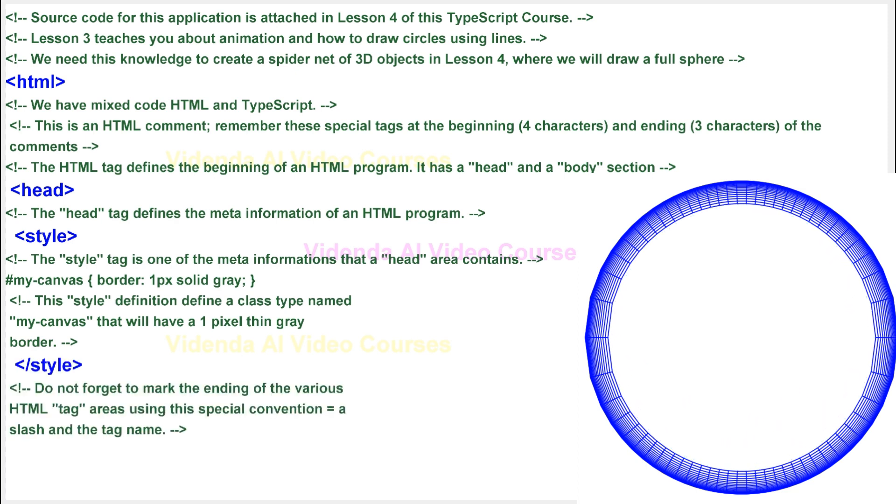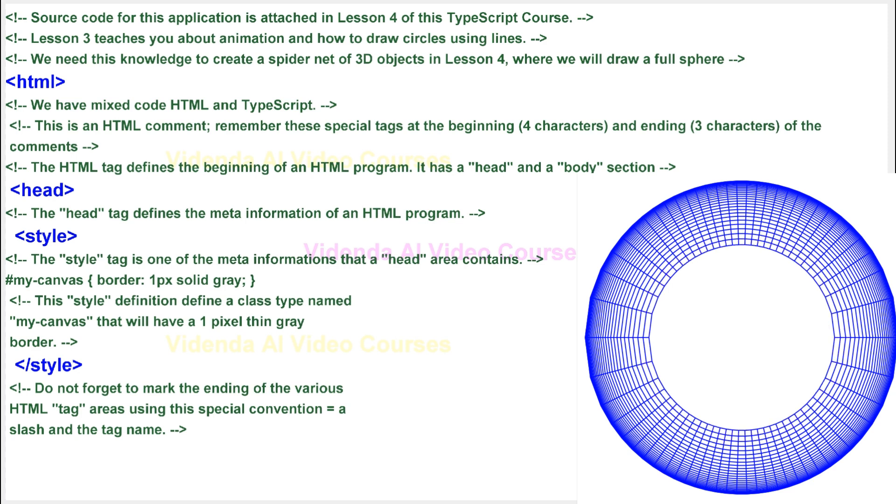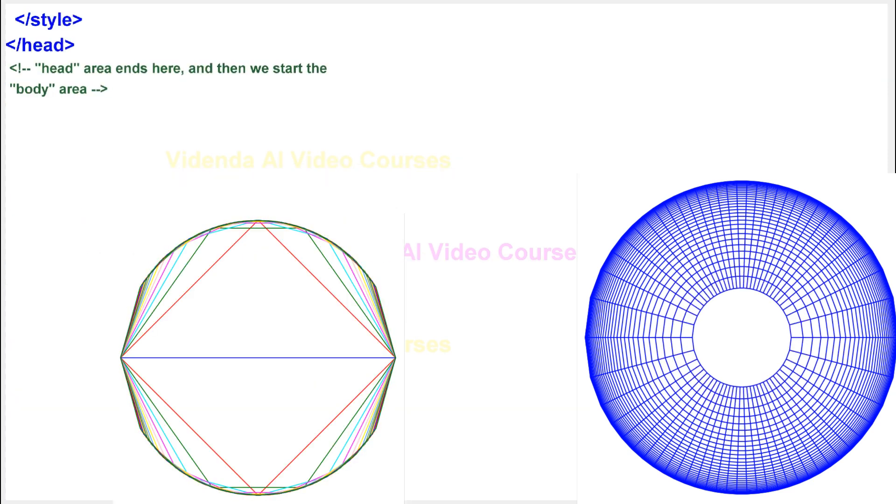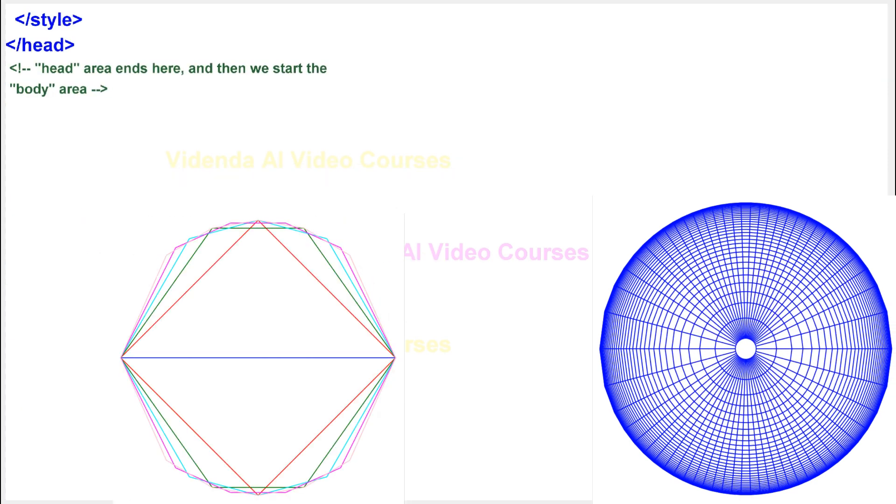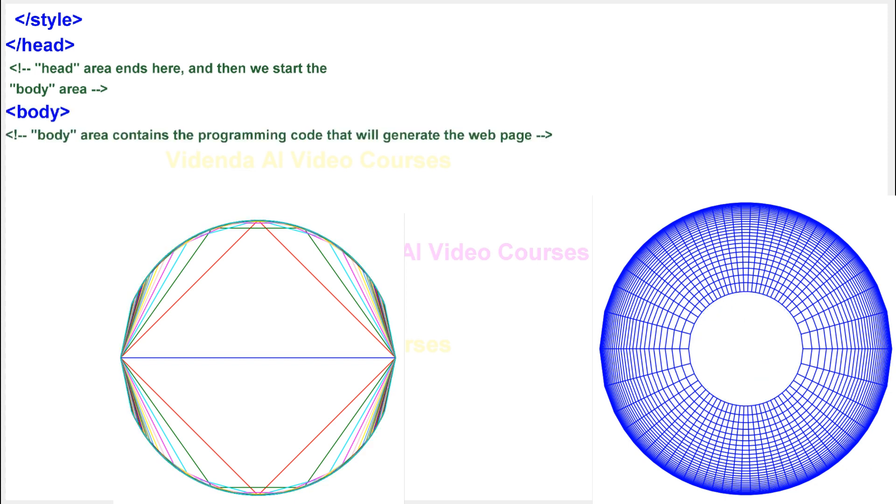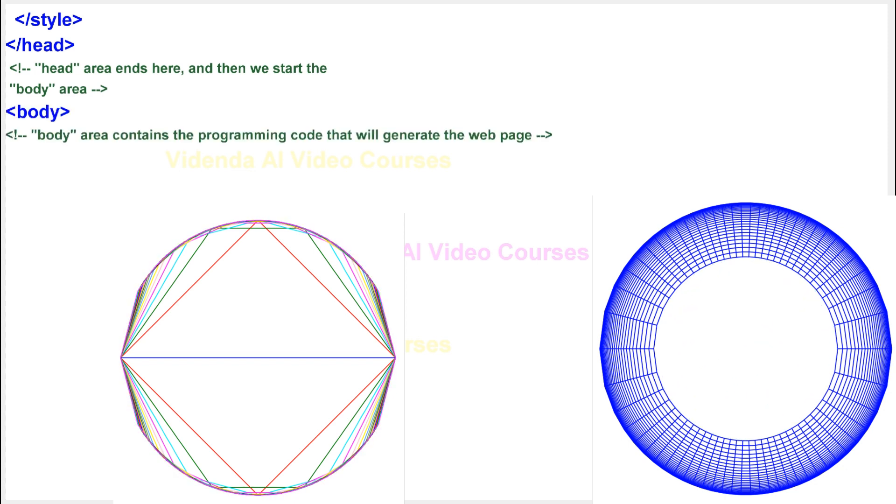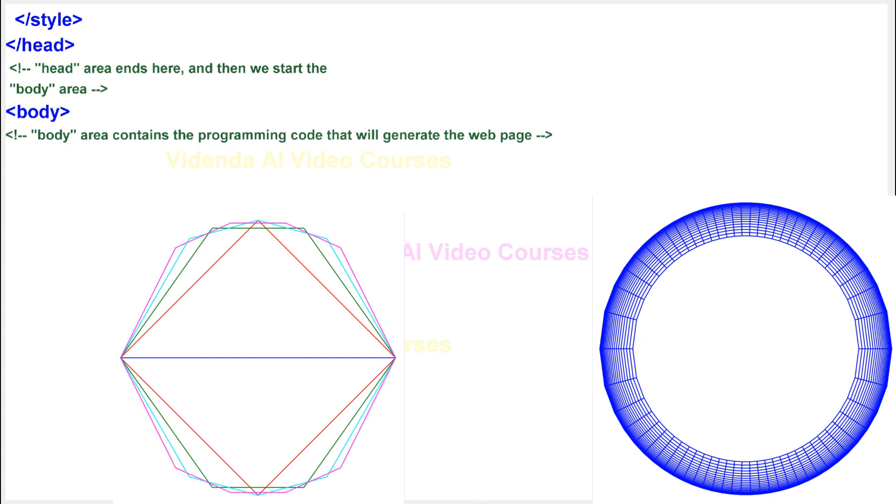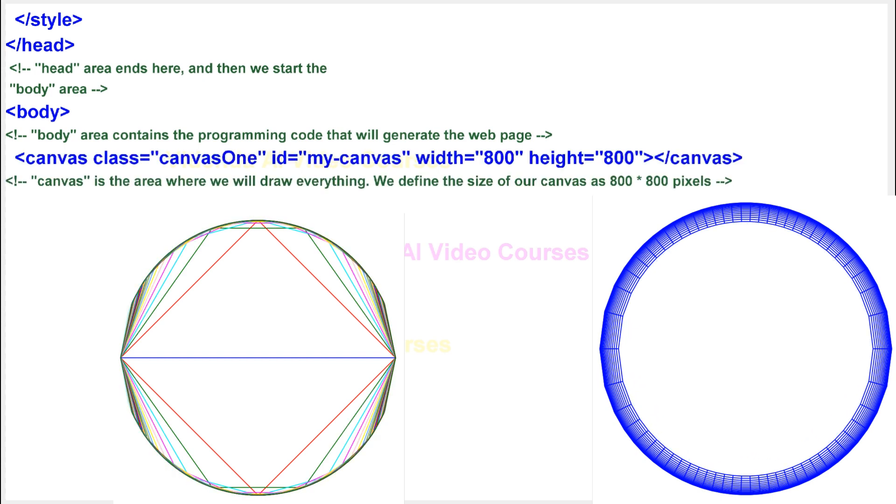Do not forget to mark the ending of the various HTML tag areas using this special convention equals a slash and the tag name. Head area ends here, and then we start the body area. Body area contains the programming code that will generate the web page. We define the size of our canvas as 800 asterisk 800 pixels.